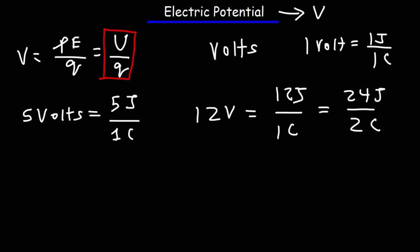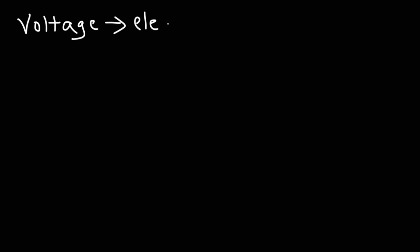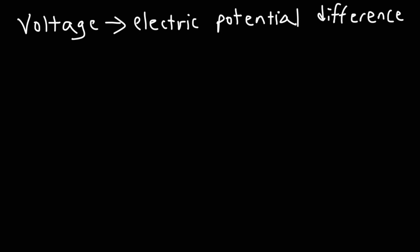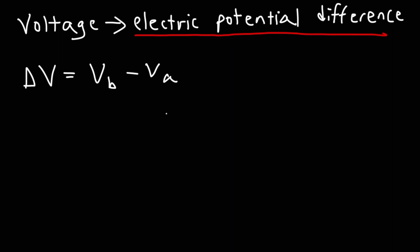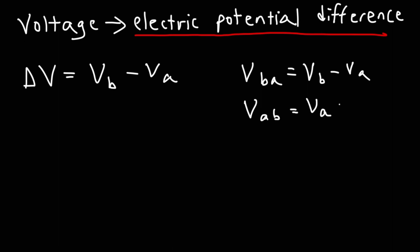Now that we've defined electric potential as potential energy per unit charge, let's relate it to something more familiar — voltage. Voltage is electric potential difference; it is the change in electric potential. So voltage would be the difference between the potential at B and the potential at A. If you see V_BA, that means V_B minus V_A. If you see V_AB, that means the potential at A minus the potential at B.